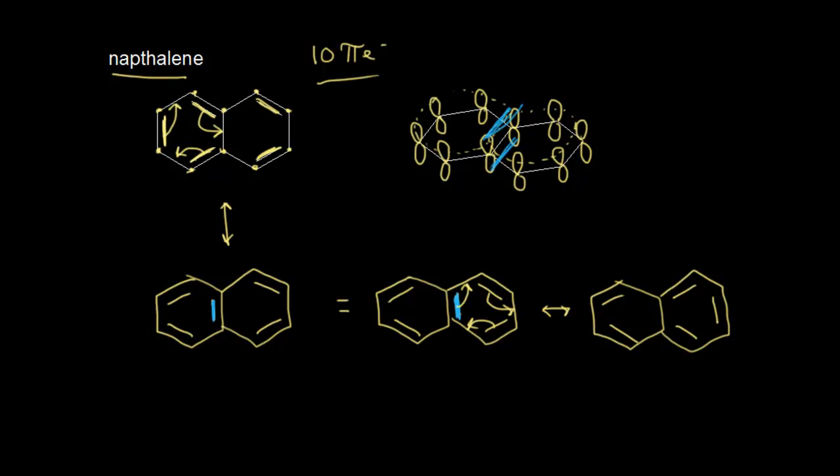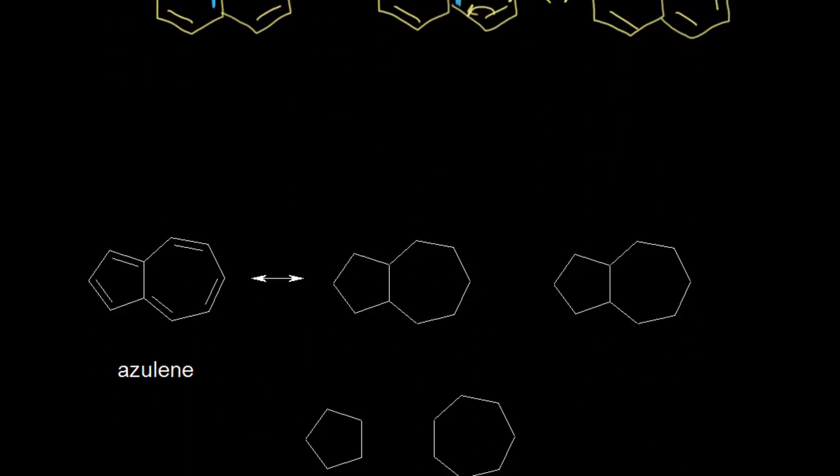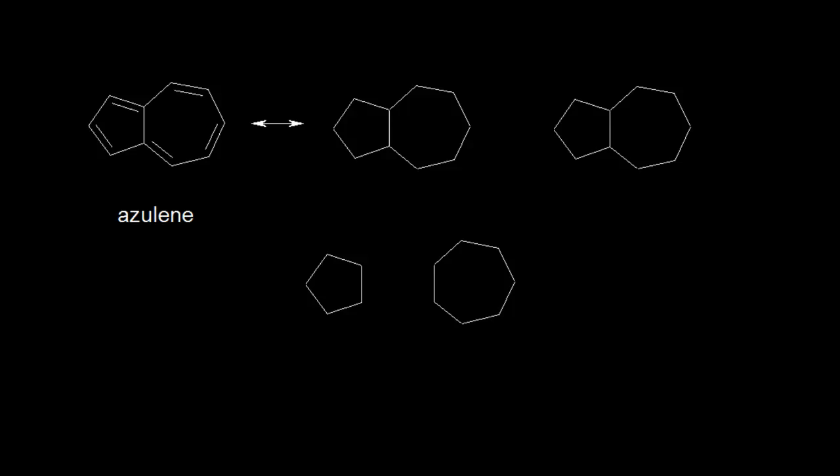Instead of focusing on those, I wanted to do another example which is an isomer of naphthalene called azulene. Azulene is a beautiful blue hydrocarbon, which is extremely rare in organic chemistry to have a hydrocarbon that's blue. It also has some other interesting properties: it has an increased dipole moment associated with the molecule, and there's also increased electron density on the five-membered ring. Here's the five-membered ring over here on the left, and it turns out there are more electrons on the five-membered ring than we would expect, giving it a larger dipole moment.